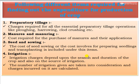The following different items are required for finding out the expenditure for production of the crop. First is primary or preparatory tillage: the charges required for all essential primary tillage operations like plowing, harrowing, and clod crushing, etc.